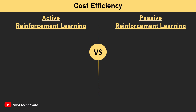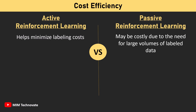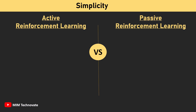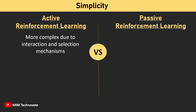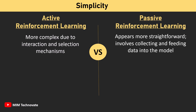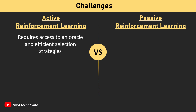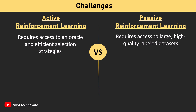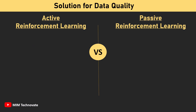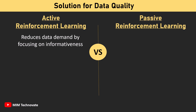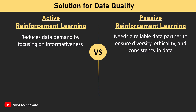For cost efficiency, Active Reinforcement Learning helps minimize labeling costs, whereas Passive Reinforcement Learning may be costly due to the need for large volumes of labeled data. In terms of simplicity, Active Reinforcement Learning is more complex due to interaction and selection mechanisms, while Passive Reinforcement Learning is more straightforward — involving collecting and feeding data into the model. Active Reinforcement Learning's challenges include requiring access to an oracle and efficient selection strategies, while Passive Reinforcement Learning requires access to large, high-quality labeled datasets. Finally, Active Reinforcement Learning reduces data demand by focusing on informativeness, whereas Passive Reinforcement Learning needs a reliable data partner to ensure diversity, ethicality, and consistency in data.